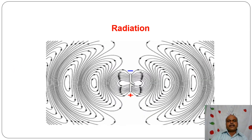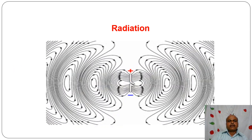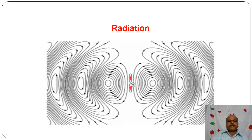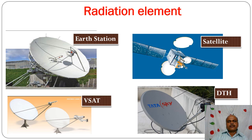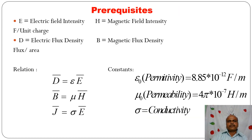This animation shows how electromagnetic waves are radiated. Different radiating elements are shown: earth station, VSAT, direct-to-home services, TV applications, and satellite. Different antennas are used to transmit and receive signals, called radiating elements.